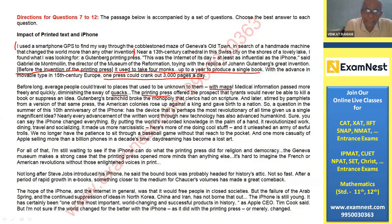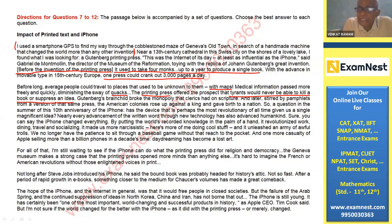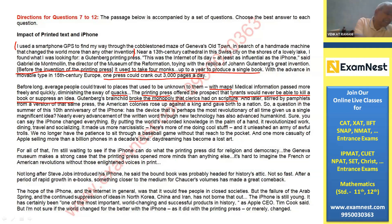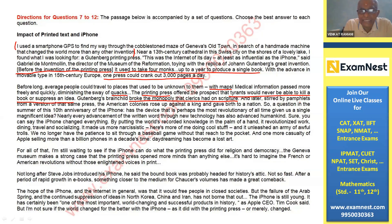The printing press played a vital role — it offered the prospect that tyrants would never be able to kill a book or suppress an idea. It did away with the monopoly and haughtiness of clerics and priests over scripture. Otherwise, whatever the priests said was final and you were not supposed to speak against them. Later, stirred by pamphlets from a version of that same press, the American colonies rose up against the king and gave birth to a nation.